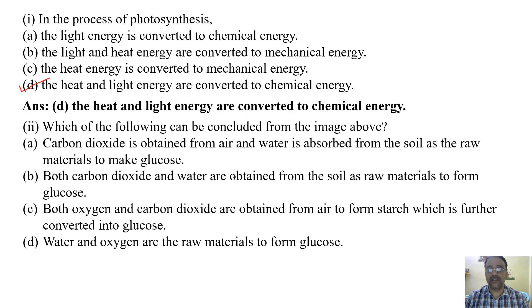Next question: Which of the following can be concluded from the image above? (a) Carbon dioxide is obtained from air and water is absorbed from the soil as raw materials to make glucose. (b) Both carbon dioxide and water obtained from the soil. (c) Both oxygen and carbon dioxide are obtained from air to form starch which is further converted into glucose. (d) Water and oxygen are the raw materials to form glucose. The correct option is: carbon dioxide is obtained from air and water is obtained from soil, so correct option is A.